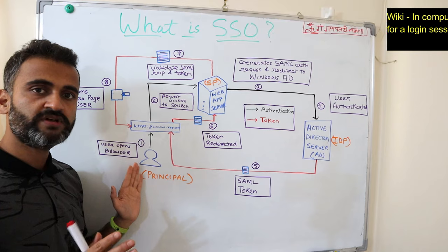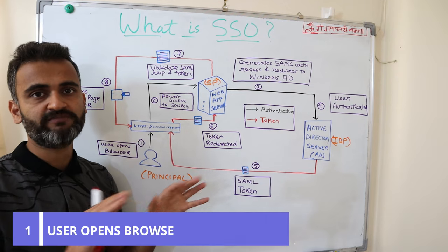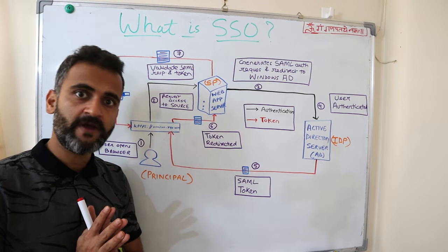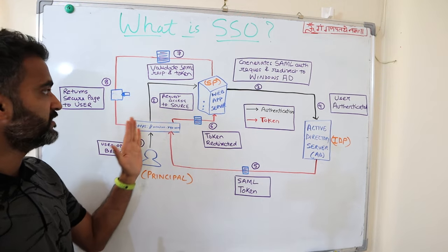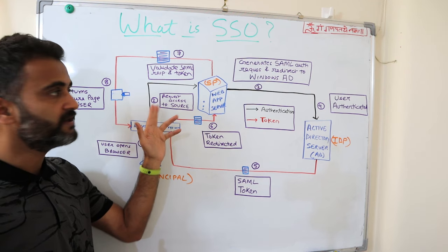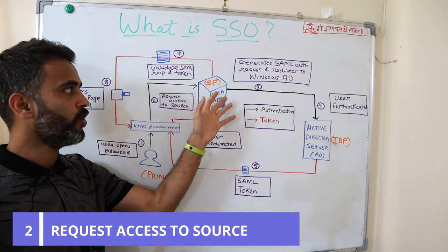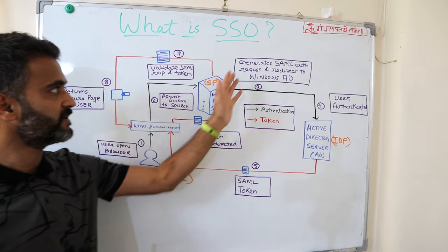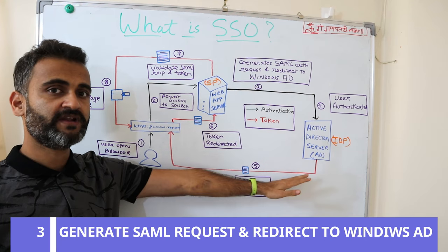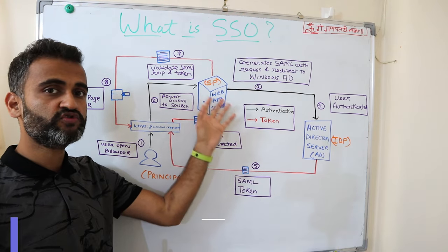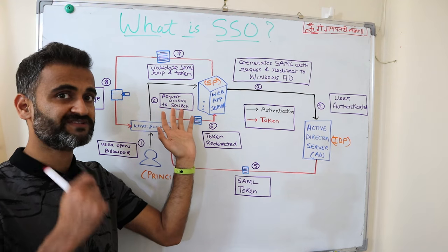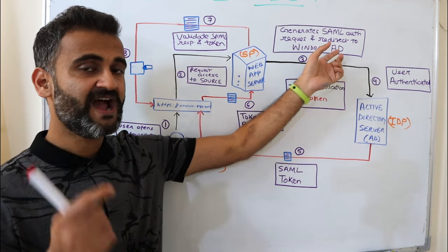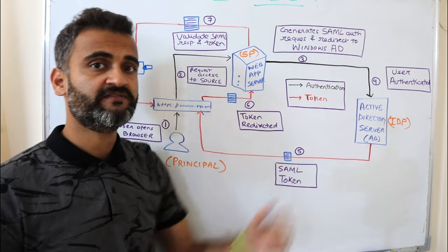At step one, the user opens up a browser and types the URL of that particular service provider — suppose we are trying to open the homepage of a web application. At step two, the browser redirects to the service provider, which is the web app server. At step three, the web app server redirects this request to the Active Directory server, because it wants to know whether this is a legitimate request from a legitimate user. So it generates a SAML authentication request and passes it on to the Active Directory server.